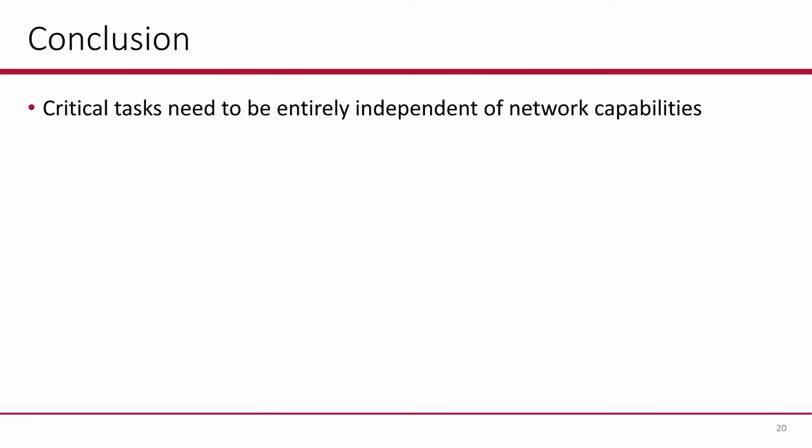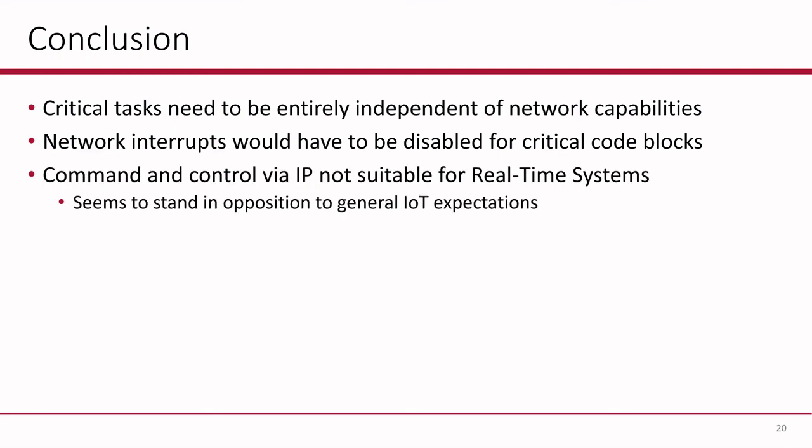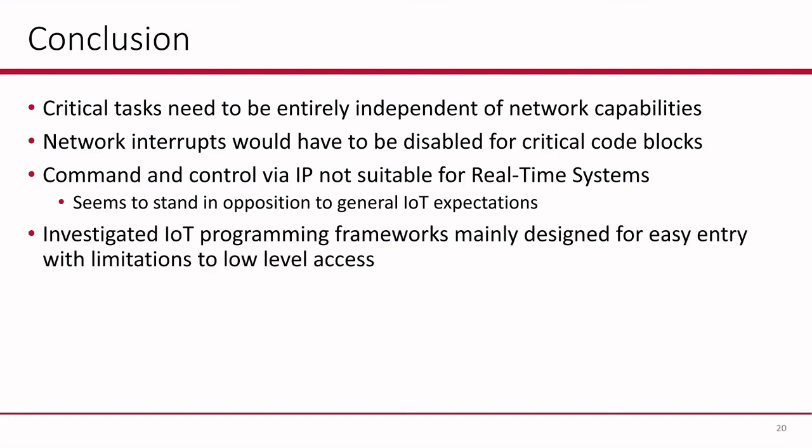Concluding, critical tasks really need to be entirely independent of network capabilities in embedded systems in the Internet of Things, because network interrupts would have to be disabled for critical code blocks. This means that command and control via IP networks is not suitable for real-time systems, because you will never have complete independence between network capabilities and critical tasks. Of course, this seems to stand in opposition to general IoT expectations. The investigated IoT programming frameworks seem to be mainly designed for easy entry and easy programmability rather than low-level access, which leads to trouble when looking at critical embedded systems.